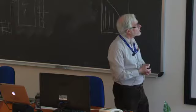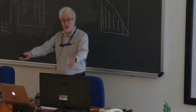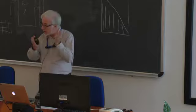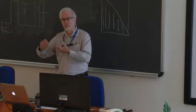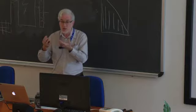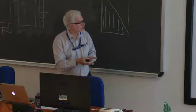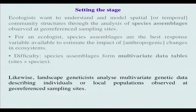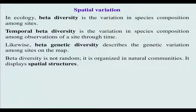The difficulty, of course, is that species assemblages form multivariate data tables. We have seen in this short course how we can analyze multivariate data tables in different ways — by PCA, but not in any possible way. We have to do it carefully, after transformation of the data. For testing, it is more difficult to test hypotheses from multivariate data tables, but we have seen that we can do that very well using canonical analysis. In landscape genetics, it is the same thing, but with genetic data describing local populations observed at georeferenced sampling sites.